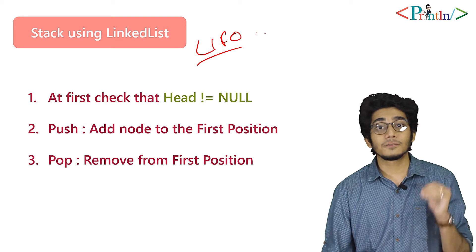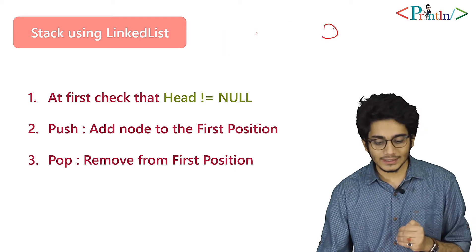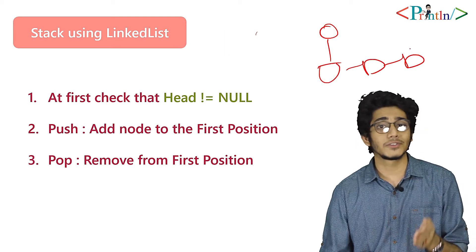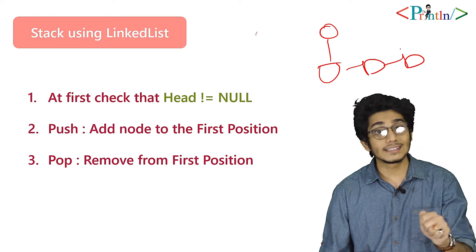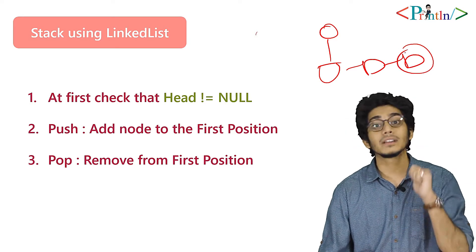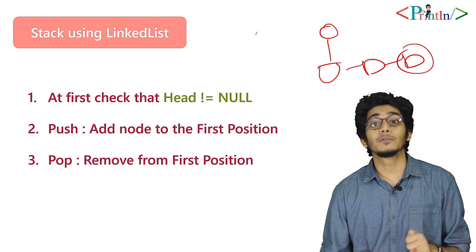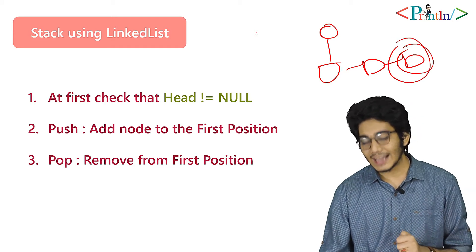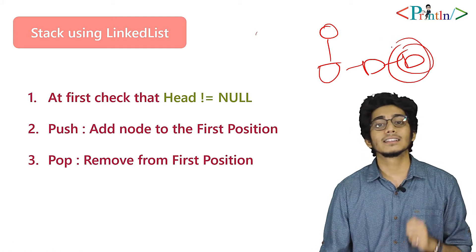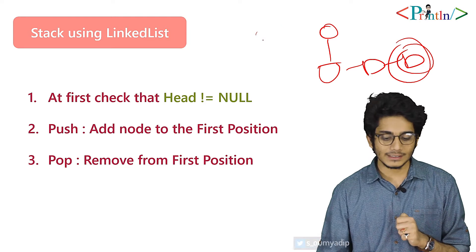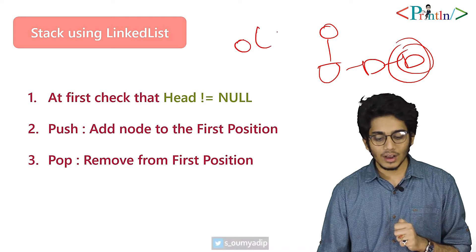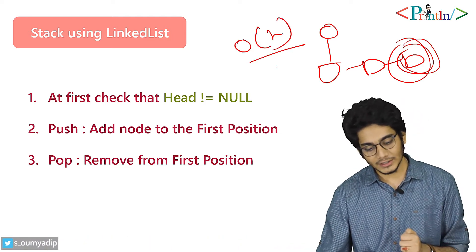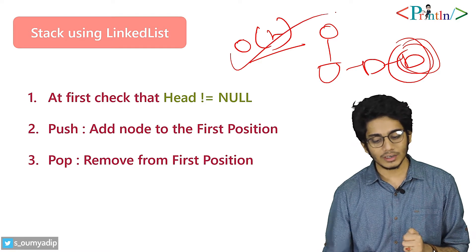We'll follow the last in first out approach. In linked list we can insert at the last position as well, and we can remove from there also. But what about the time complexity? If you are trying to insert anything at the last of the linked list, the time complexity will be O(n). And if you are trying to remove anything from the last, it will also be O(n).